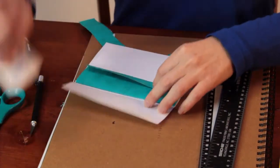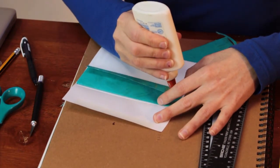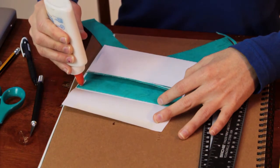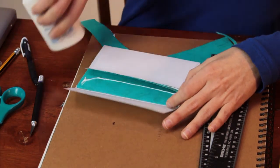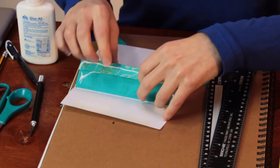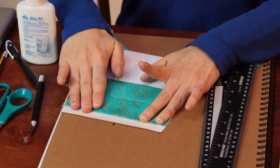All right, great, and now what I'm going to do is I'm going to put a very thin layer of glue along the back side of my paper and under the flap that I made. And I'm going to press that down.